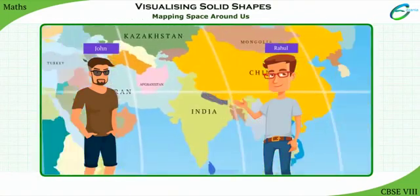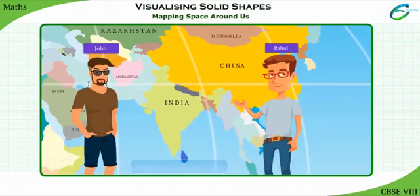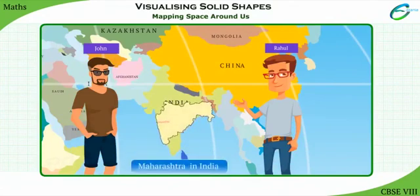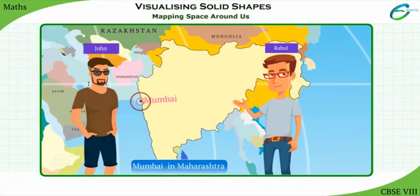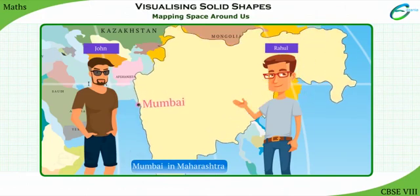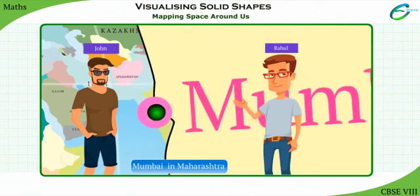In the world, India is located here. Maharashtra state is located on the western side of India. In Maharashtra, Mumbai city is located here, on the coast. And this is South Mumbai, where I stay.